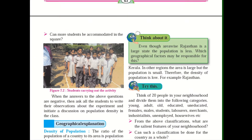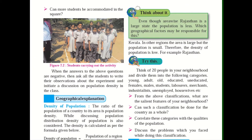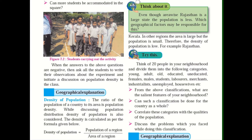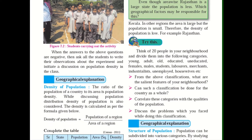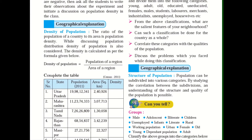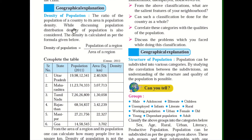Now students, come to page number 44 in your textbook. We will come to density of population. What do you mean by density of population? It means the number of people per unit of an area. Density of population is the ratio of the population of a country to its area — that is its population density.